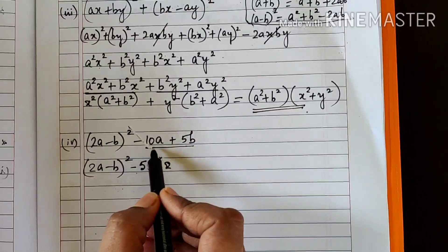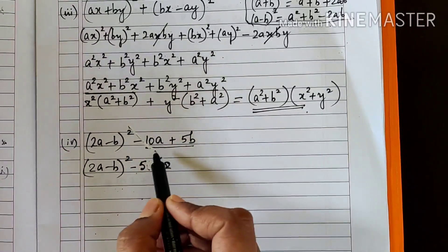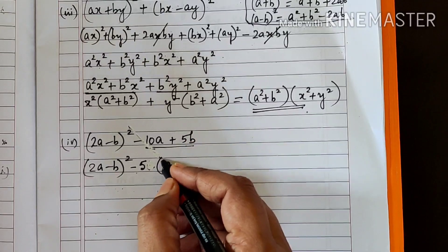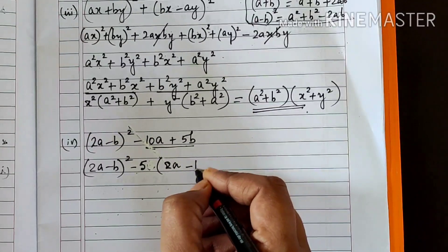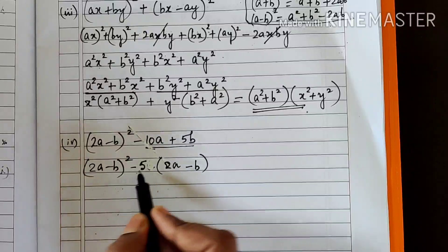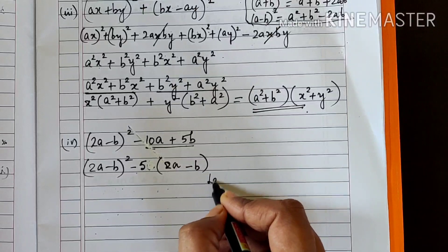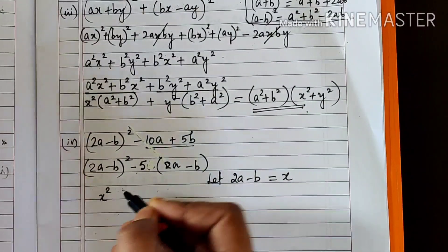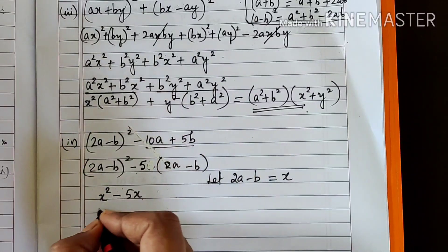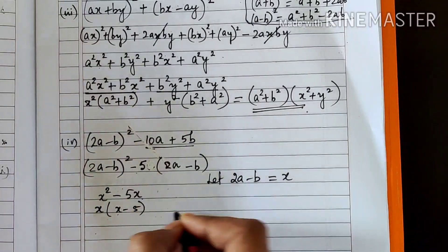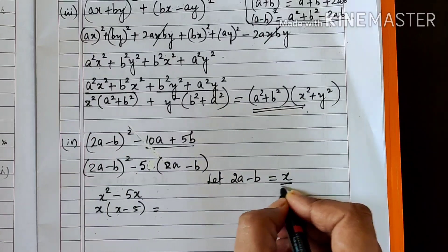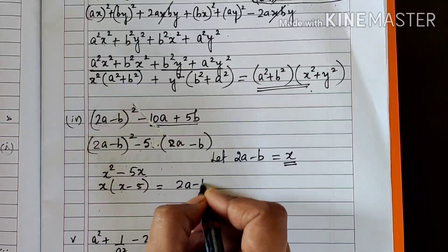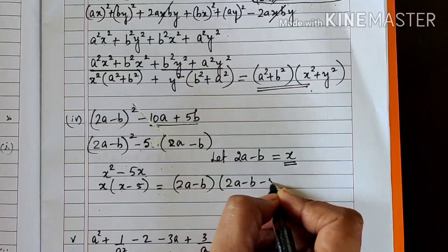Next: (2a - b)² - 10a + 5b. The common factor for -10a and +5b is -5, so take it out: -5(2a - b). Now the expression is (2a - b)² - 5(2a - b). Let x = 2a - b, giving x² - 5x. Taking x as a common factor: x(x - 5). Substituting back x = (2a - b): (2a - b)(2a - b - 5).